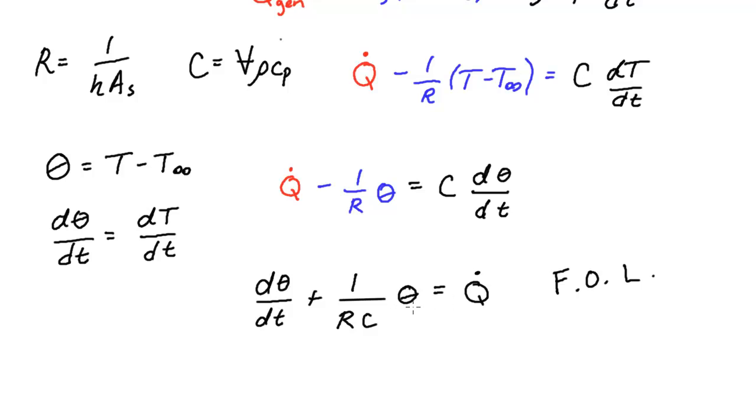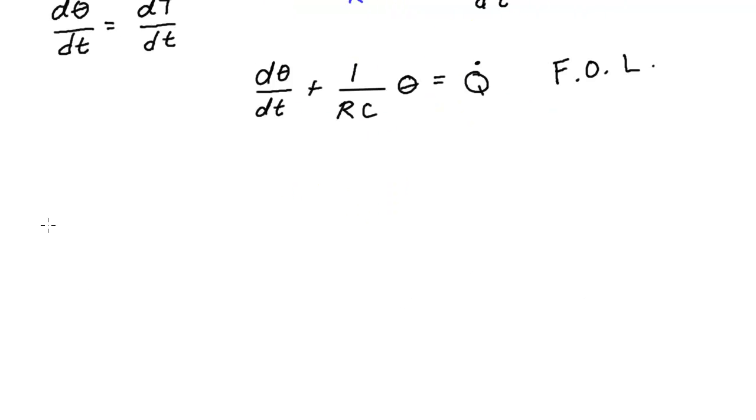And the method for solving these types of differential equations is using something called an integration factor. And because we don't have time to go into that, I'm just going to tell you that the integration factor is e to the integral of this function multiplied by our variable of interest, 1 over RC dt. And since we're assuming our resistance and our capacitance is constant with respect to time, our integrating factor just simply becomes e to the 1 over RC multiplied by t. If you can imagine you took this out and the integral of dt is just t. And so this is our integrating factor.